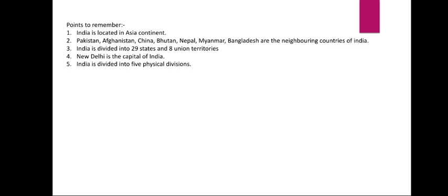India is divided into 29 states and 8 union territories, and New Delhi is the capital of India. India has five physical divisions: northern mountains, northern plains, the western desert, the southern plains, the coastal plains, and the islands.